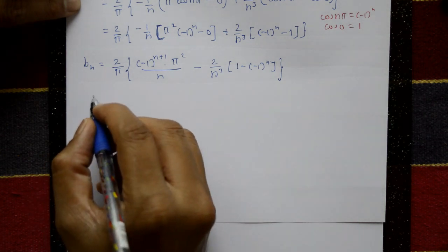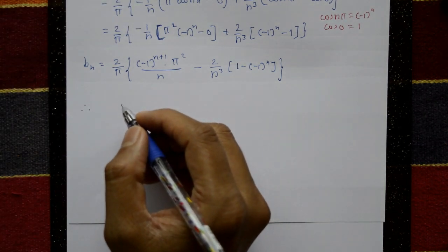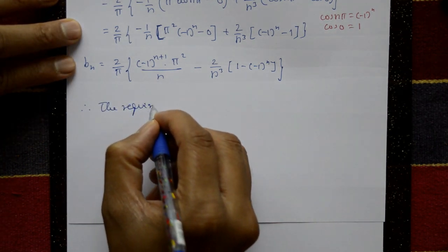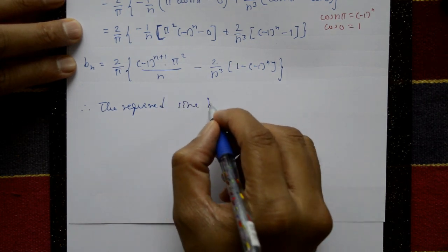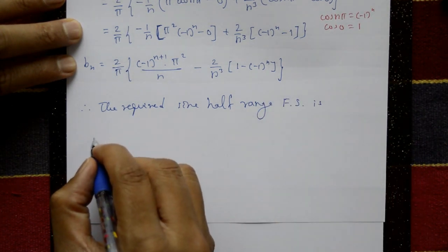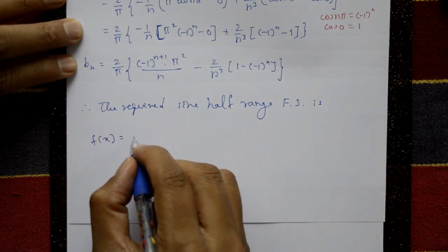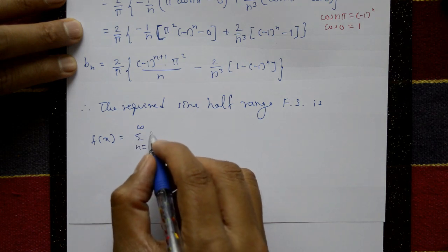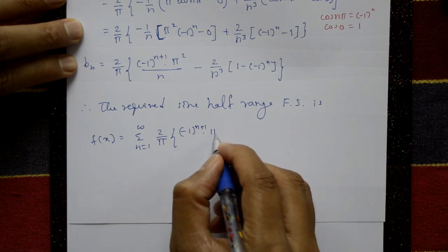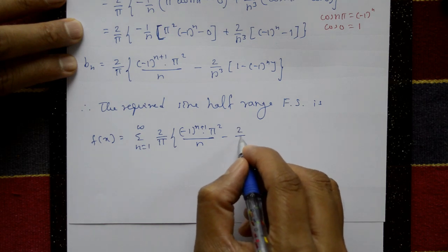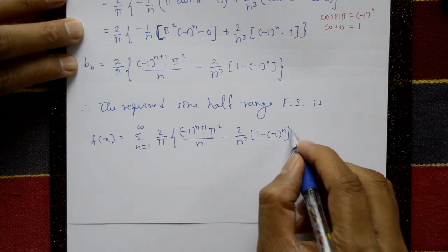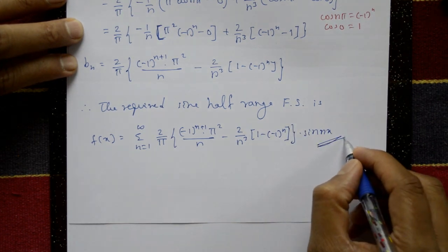Now substituting the bₙ value into equation number one, the required sine half-range Fourier series is: f(x) = summation from n=1 to infinity of { (2/π) · [ (−1)ⁿ⁺¹ · π²/n − (2/n³) · (1 − (−1)ⁿ) ] } · sin(nx). This is the required series.